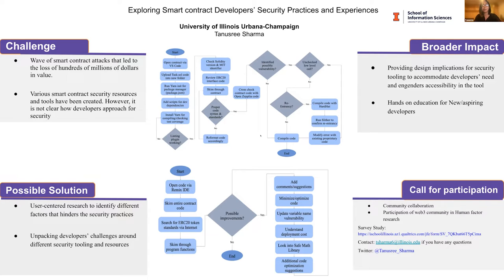To give some examples, you can see two flowcharts — two different strategies presented from my usability research with smart contract developers. These are snapshots from two different developers and the approaches they took while given a code review for a smart contract. These two workflows are pretty different. One developer started with compiling the contract, checking different coverage tests, and cleaning the code with different linting libraries, then skimming through the code to identify smart contract vulnerabilities.